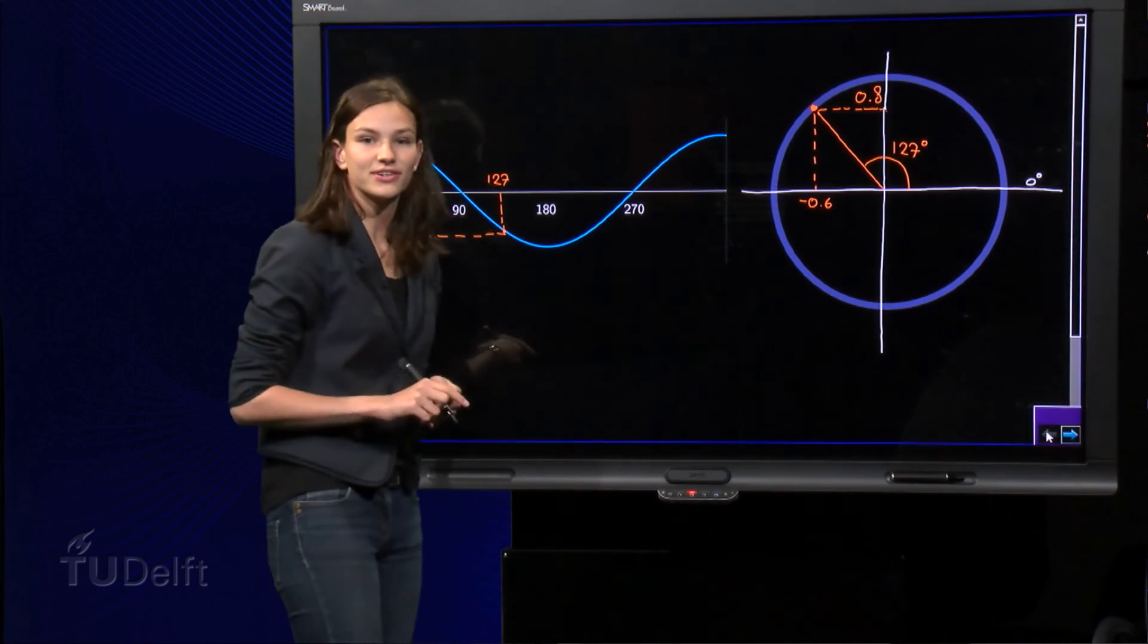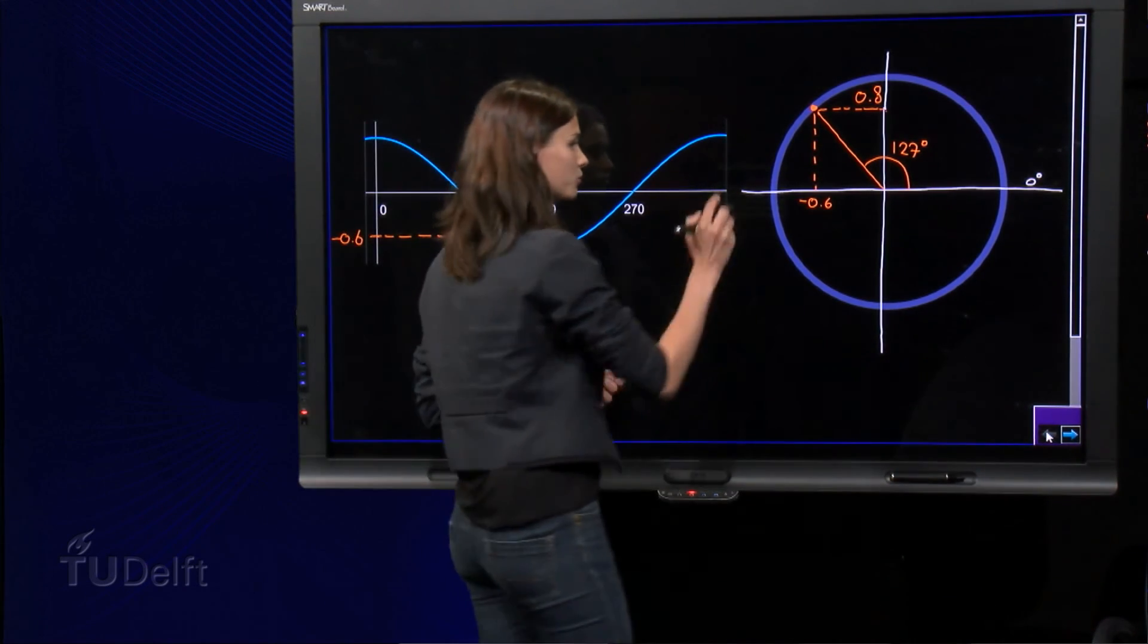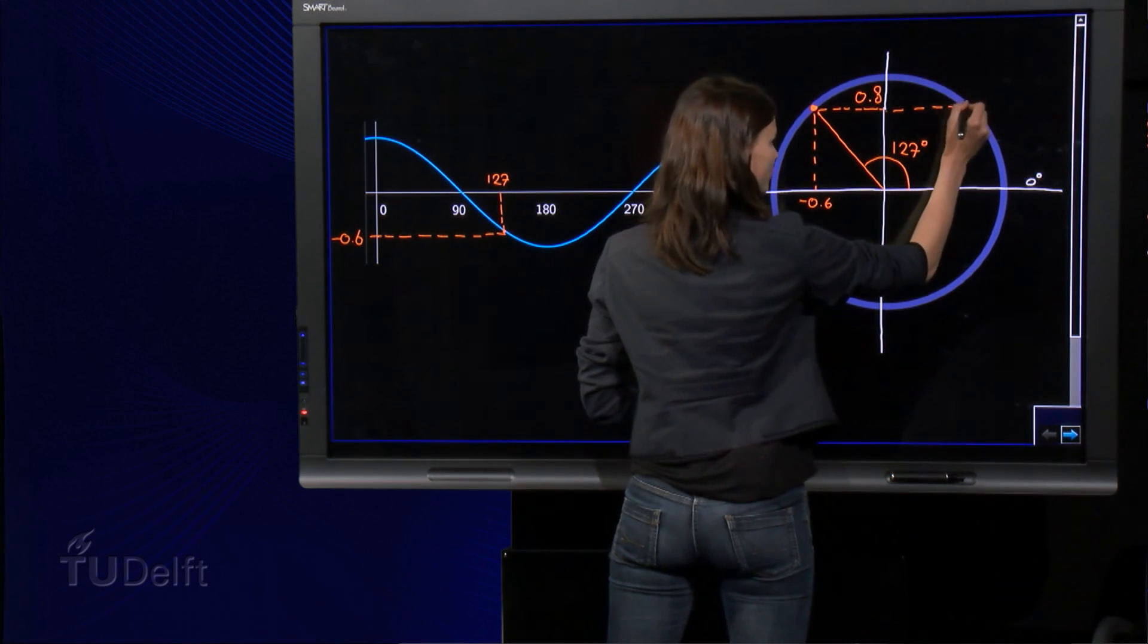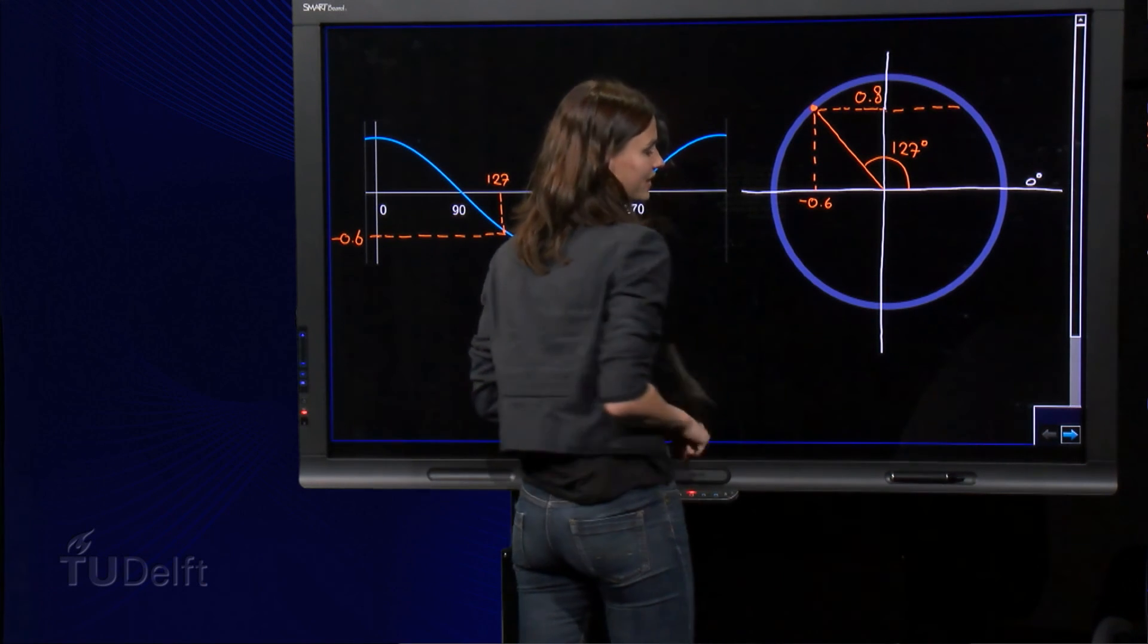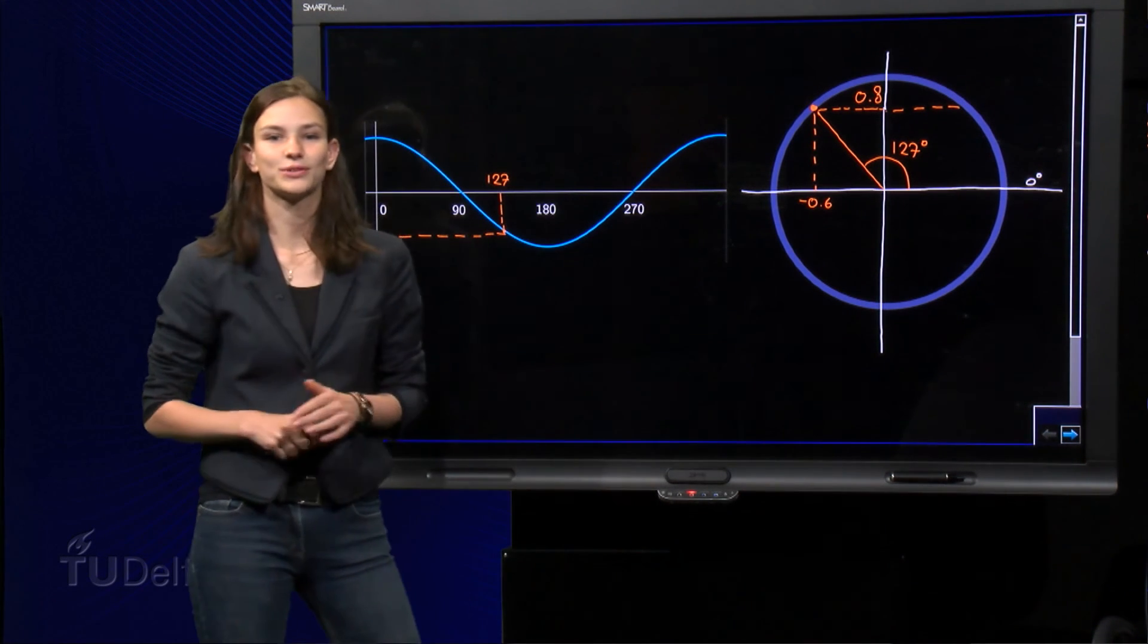Going back to the unit circle, you can see that there are two points in the unit circle where the sine equals 0.8. One with a positive cosine and one with a negative cosine. And that was where we made the error.